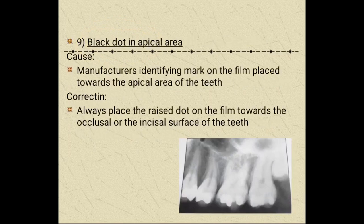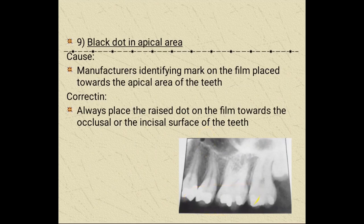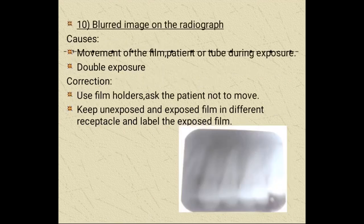A black dot in the apical area is due to the manufacturer's identifying mark on the film being placed towards the apical area of the teeth. Always place the raised dot of the film towards the occlusal or incisal surface of the teeth. A blurred image on the radiograph is due to movement of the film, patient, or tube during exposure, or a double exposure. Always use film holders, ask the patient not to move, and keep unexposed and exposed films in different, labeled receptacles.